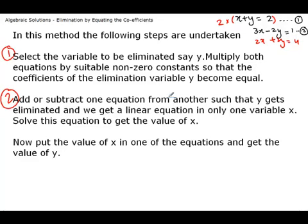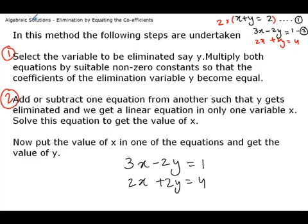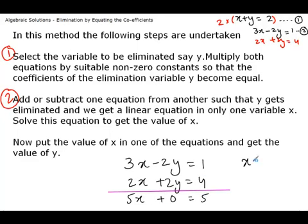The second step is to add or subtract one equation from the other such that y gets eliminated and we get a linear equation in only one variable, x. The second equation is 3x minus 2y equals 1, and the first equation after multiplying is 2x plus 2y equals 4. Adding them: 5x equals 5, which gives us x is equal to 1.